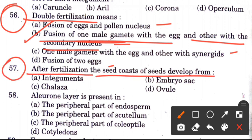Question 57: After fertilization, the seed coat develops from — options are integuments, embryo sac, chalaza, or ovule. The answer is A, integuments — integuments form the seed coat.